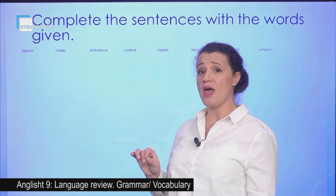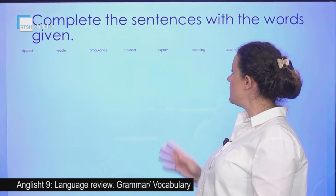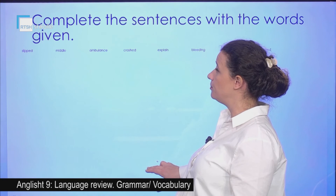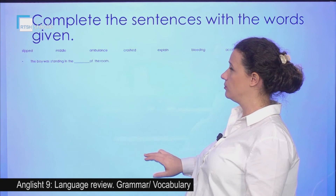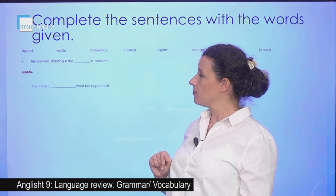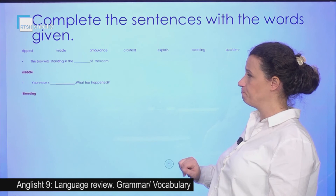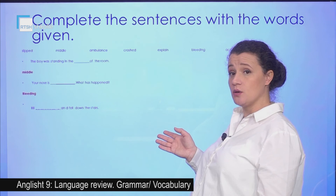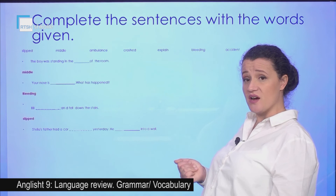Now we are given some words and we have to put them in the correct order: slipped, middle, ambulance, crash, explain, bleeding, accident, and jump. The boy was standing in the middle of the room. Your nose is bleeding — what has happened to you that your nose is bleeding? Bill fell down the stairs — he slipped and fell down the stairs, maybe the floor was wet and he slipped.